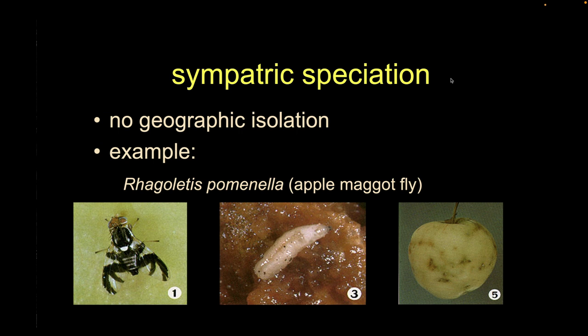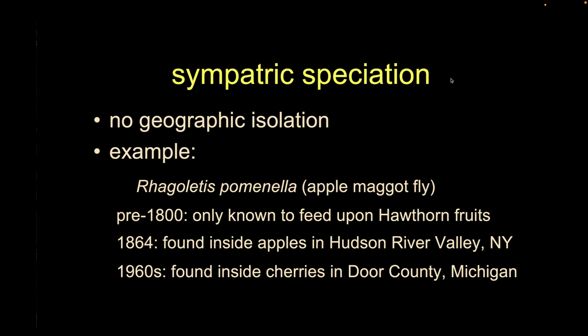A real example: an insect that feeds on apples. Before 1800 it only fed on hawthorn fruits. In 1864 it was first found on apples in the Hudson Valley, and in the 1960s on other fruits. These flies are all theoretically in the same area — this is not allopatric but sympatric speciation. They land on different fruit with different attributes, and we've seen speciation of this critter even within the same orchard. The ones on hawthorns no longer breed with those on apples.